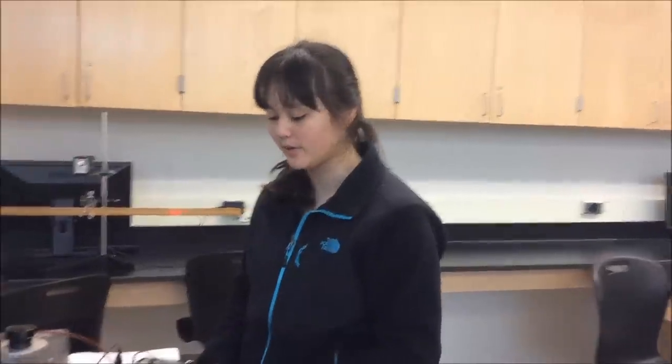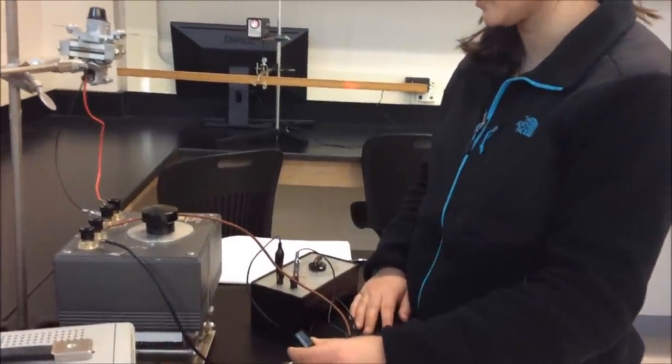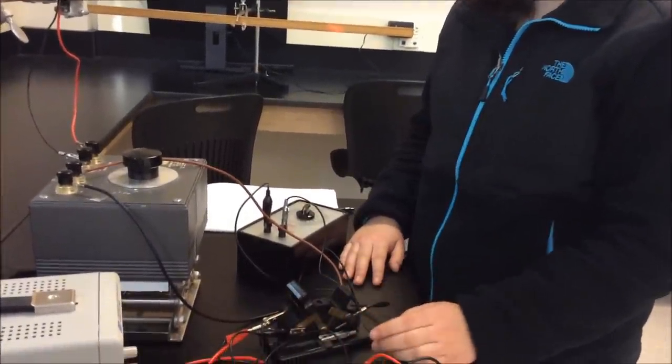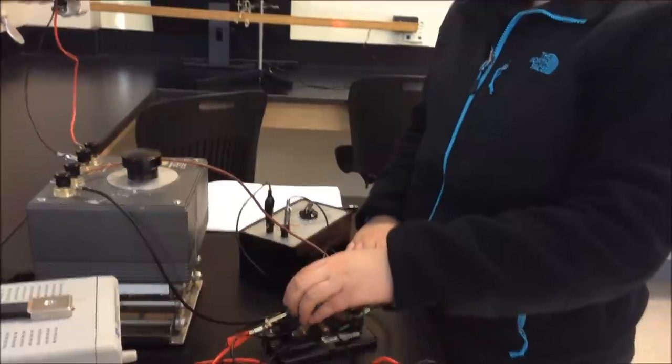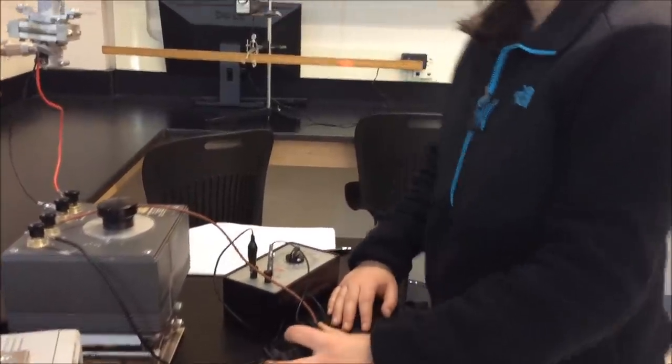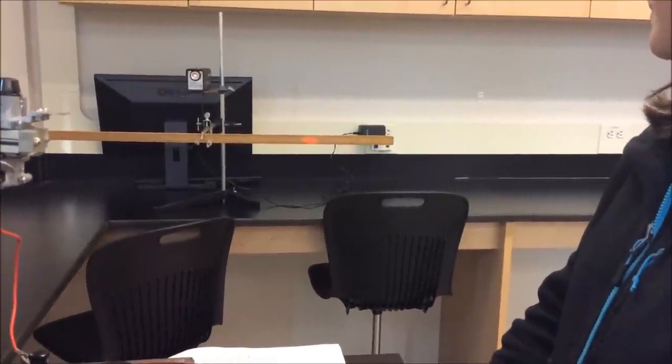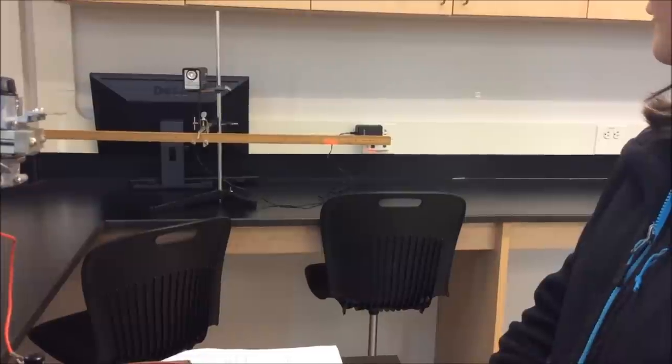The first thing that you're going to do is take the switch and put it to direction A. This means that the capacitor is charging. Then when you flip it to direction B, the capacitor discharges. While you're doing this, you're going to look at the position of the laser on the meter stick and record the deflection.